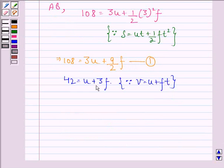Now we multiply this equation by 3. So we have 126 equals 3u plus 9f. We call this equation 2.